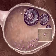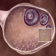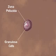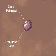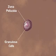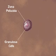The primary follicle houses an oocyte encapsulated by a coating called the zona pellucida. It also contains a layer of granulosa cells that surrounds the oocyte.